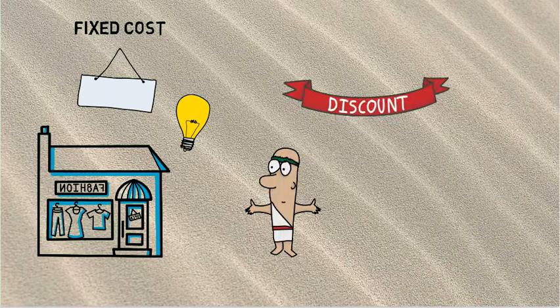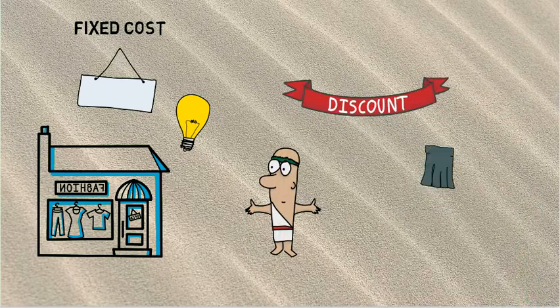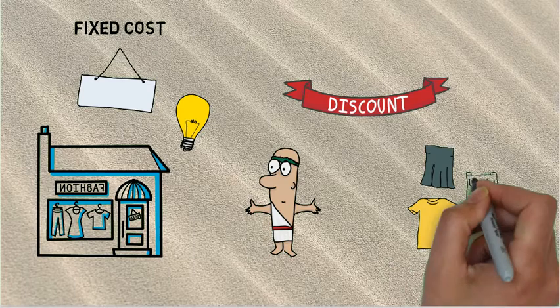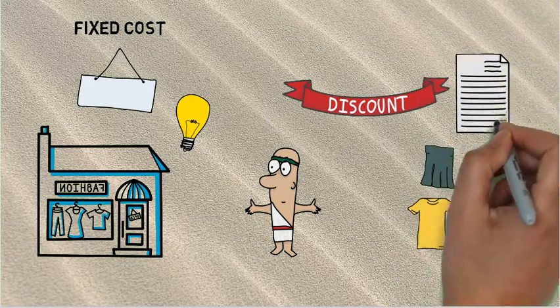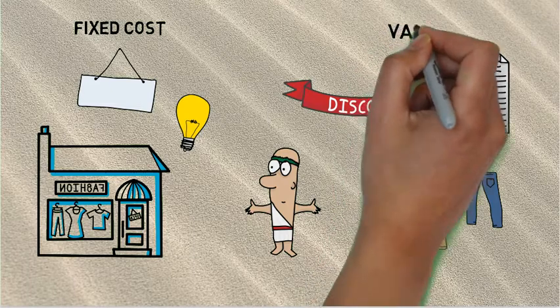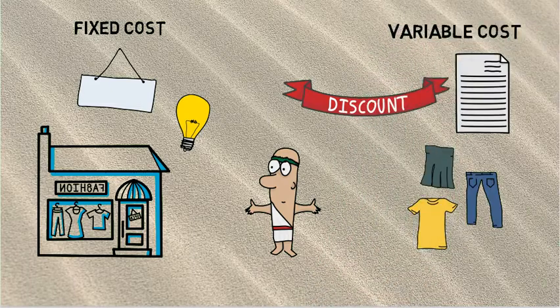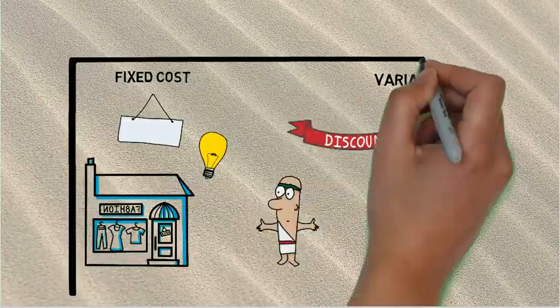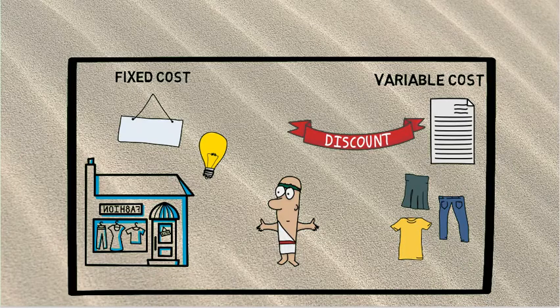However, after you have started your business, you might incur costs on advertising, purchasing new clothes to sell, paying electricity bills, etc. These costs are not just recurring, but also something that keeps on changing. Hence, such costs are called as Variable Costs. And Fixed Costs and Variable Costs together combined, give us Total Costs.